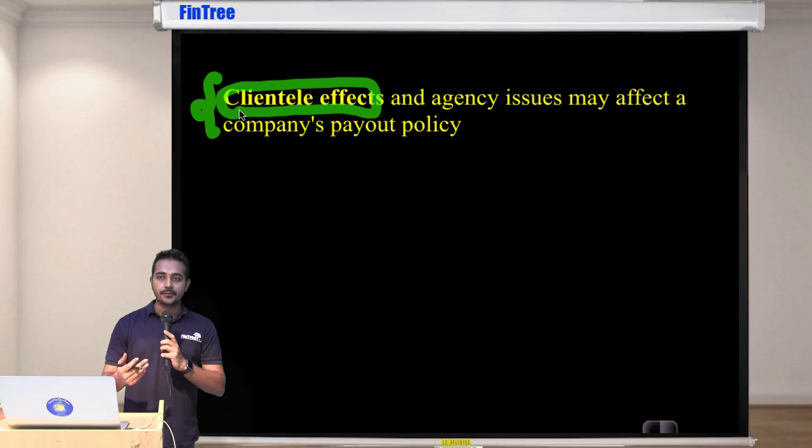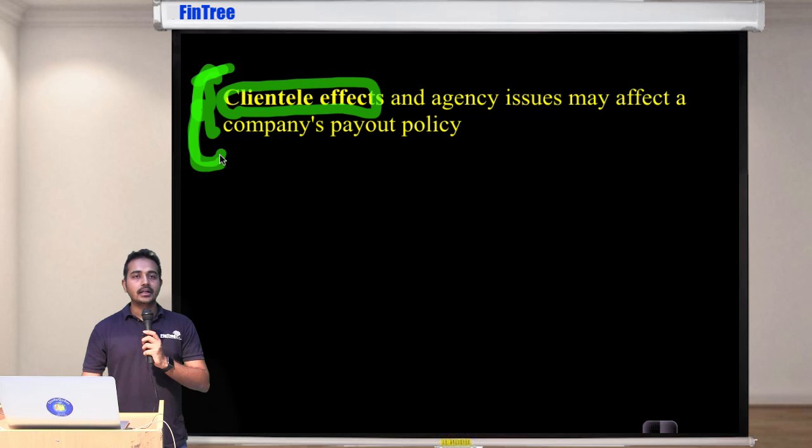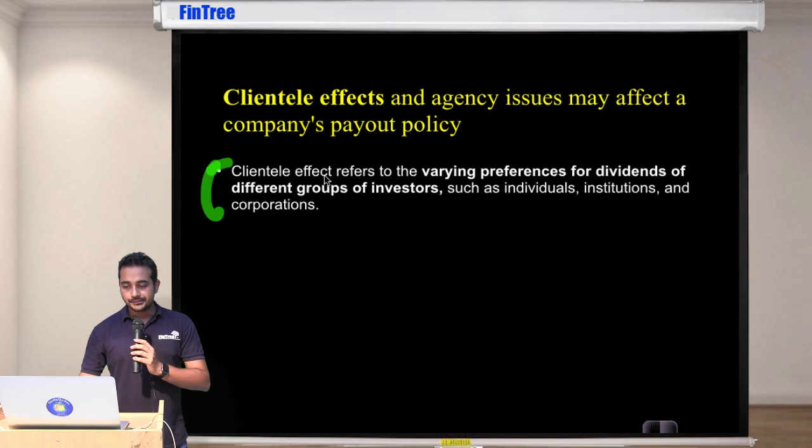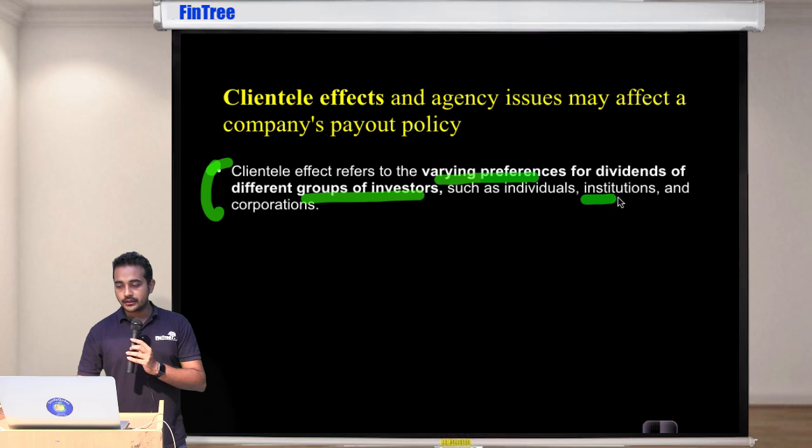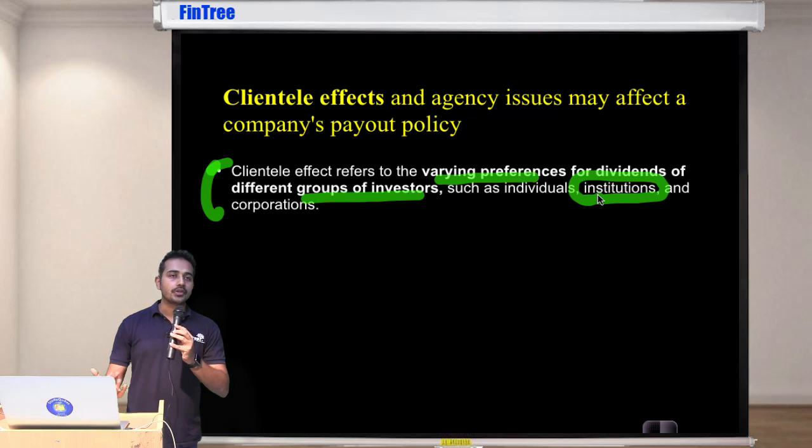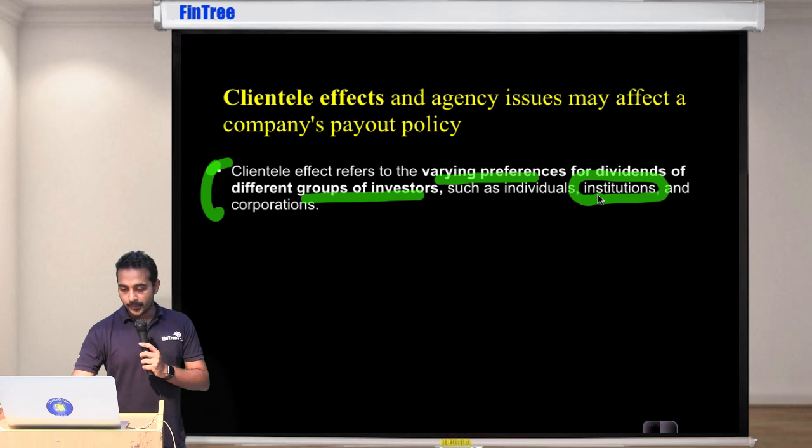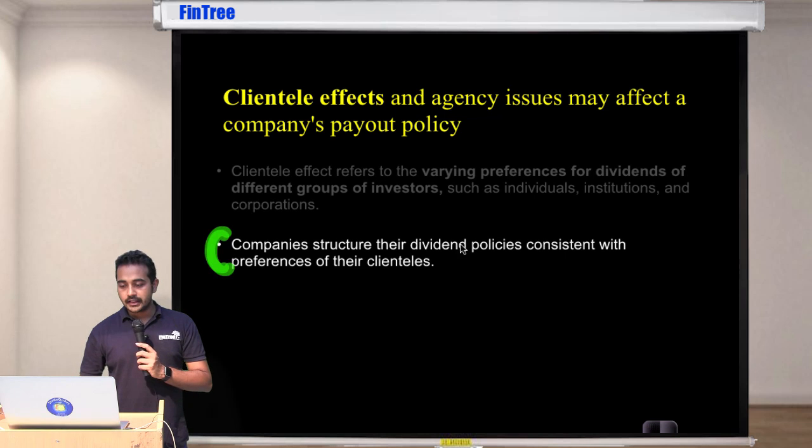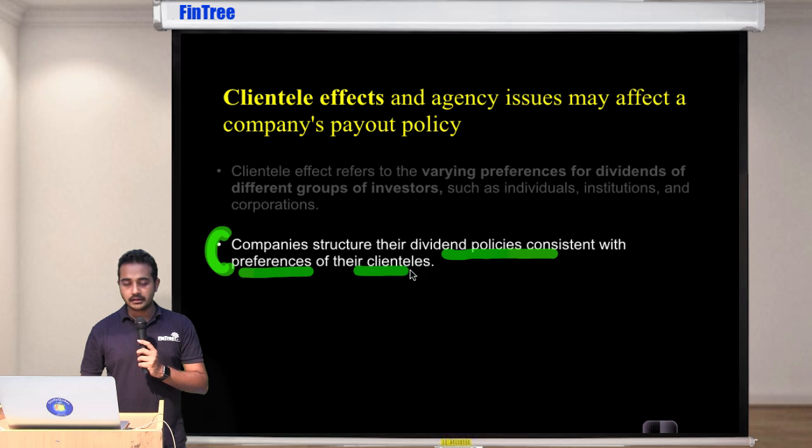Are you following this? Now for some reason companies suddenly change this policy then of course those investors would not be willing to be in that stock anymore because they were used to receiving that type of dividend from the company every year. So that's what they've said that once you start, initiate a dividend policy, then certain type of clients get used to those dividends. So clientele effect refers to varying preferences for different group of investors which also include institutions. Imagine large mature pension funds - so funds which have matured and if some part of their fund portfolio is in equities they will expect some amount of cash flow to take care of all the accruing pension liabilities, correct? So they will also expect some amount of dividend there. Now companies structure their different policies which are consistent with the preference of their clienteles.